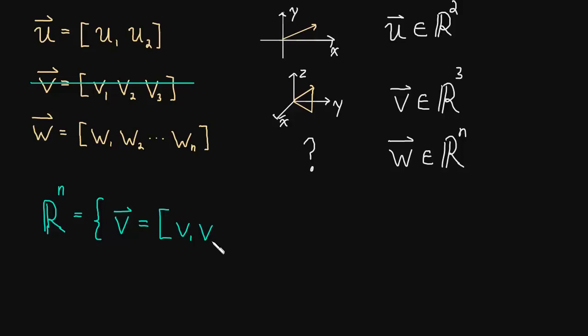It's the set of vectors v with n components. So v_1, v_2, dot dot dot, to v_n. So there's n components here.